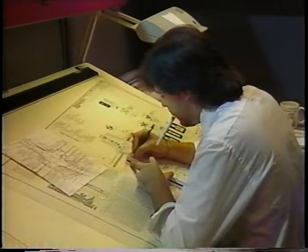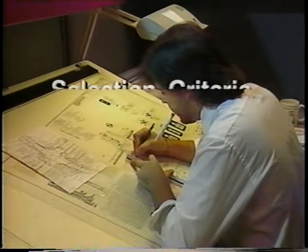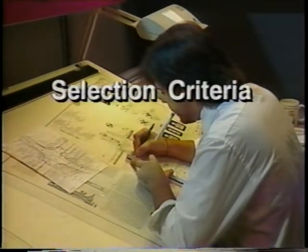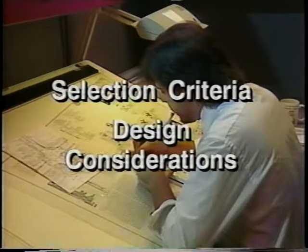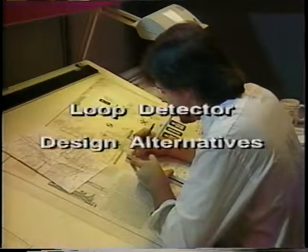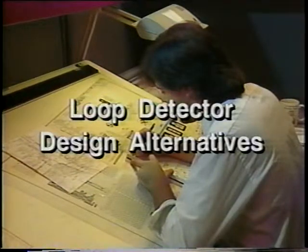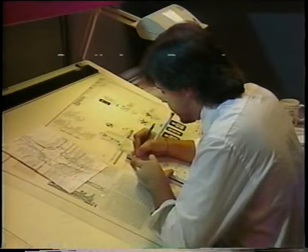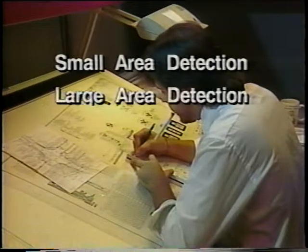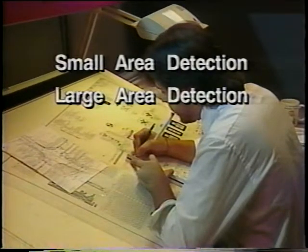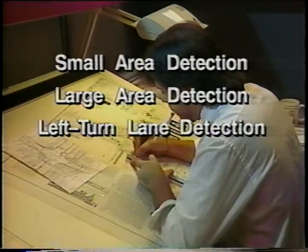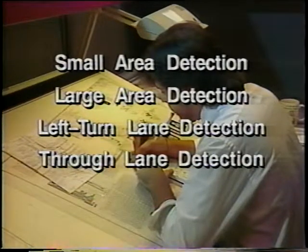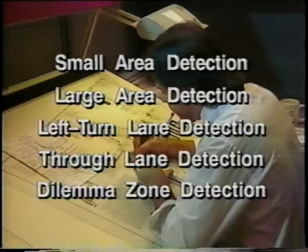During this presentation, we have discussed the selection criteria of detector design as well as the design considerations. Now let's discuss loop detector design alternatives for small area detection, large area detection, left turn lane detection, through lane detection, and dilemma zone detection.